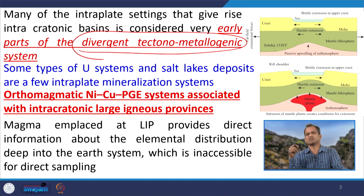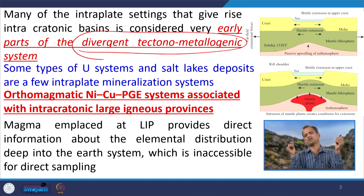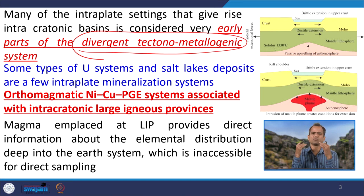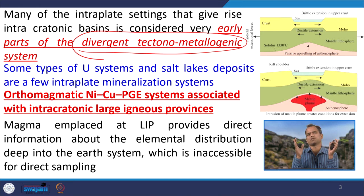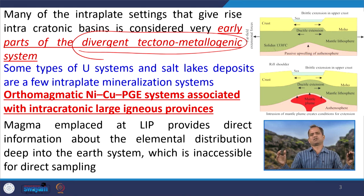Those divergent tectonic systems, which are later formed, start with the magmatic system. There will be stretching, there will be magmatizing, and there will be rifting, and finally it will be converted to the drifting stage. From rifting to drifting, we are creating two separate plates. But until the plates are separated, we have an intact plate, and within that we are allowing this magma to rise through different conduits and spread on the surface — so we call it the large igneous province.